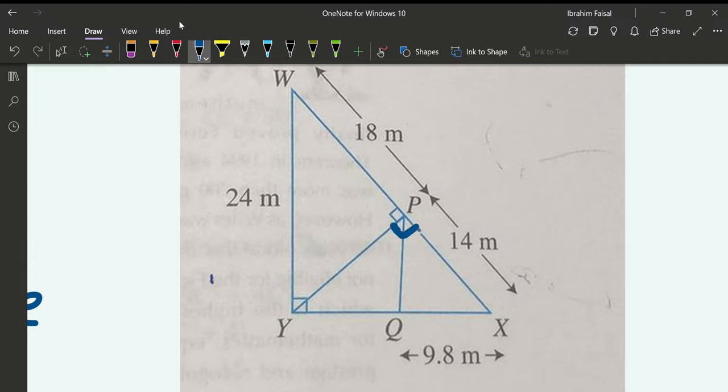Now, which one would be the hypotenuse? This side would be the hypotenuse. This full side would be the hypotenuse: YX, because it is opposite to the 90-degree angle mark.